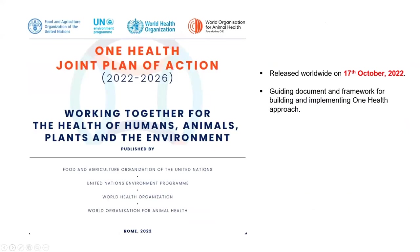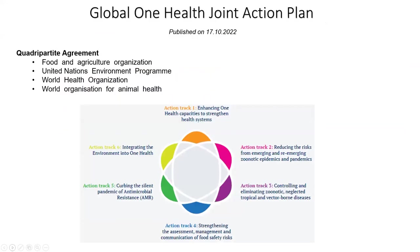WHO has released a One Health Joint Action Plan that lays down action tracks all countries must follow for comprehensive One Health-based surveillance. This covers strengthening of healthcare systems, risk reduction for emerging epidemics and pandemics, controlling and eliminating zoonotic and vector-borne infections, strengthening the assessment, management, and communication of food safety risks, curbing the silent spread of antimicrobial resistance, and integrating the environment component into One Health.